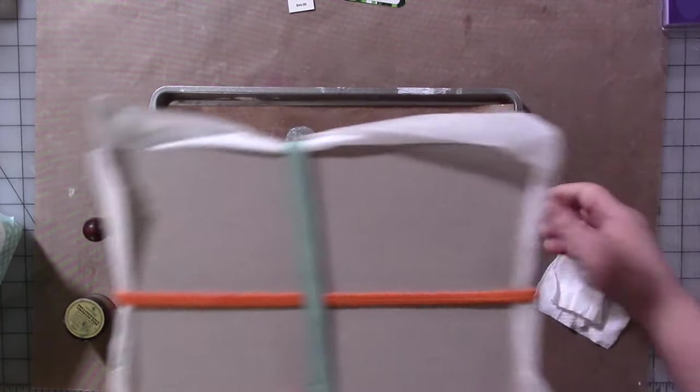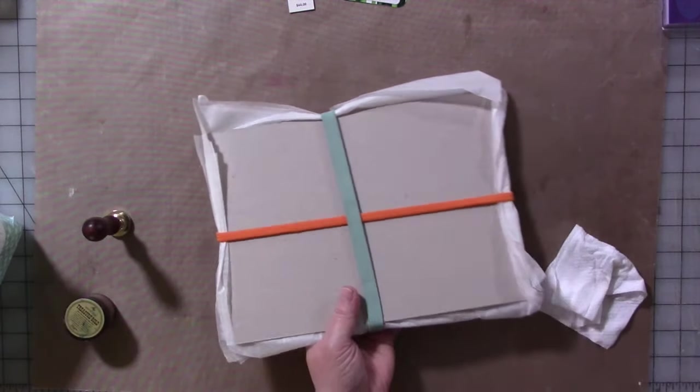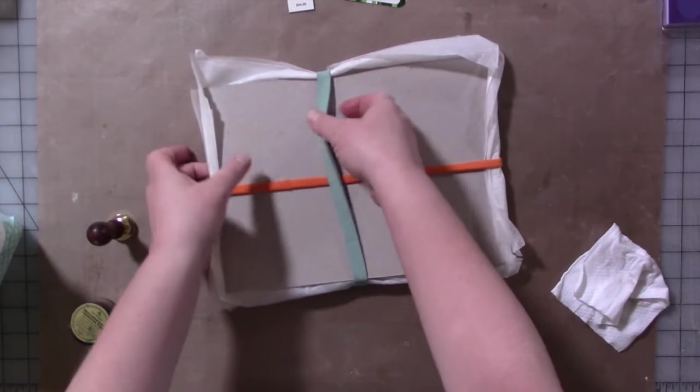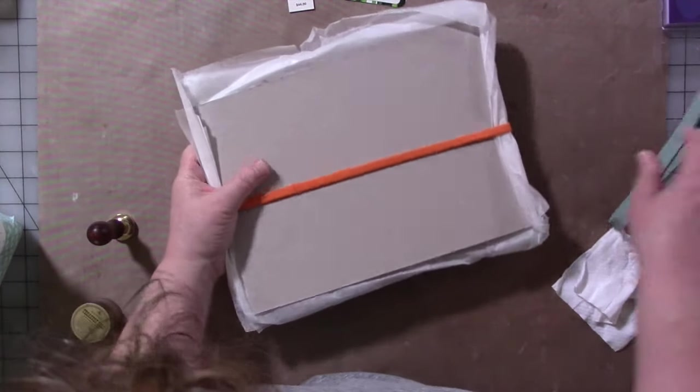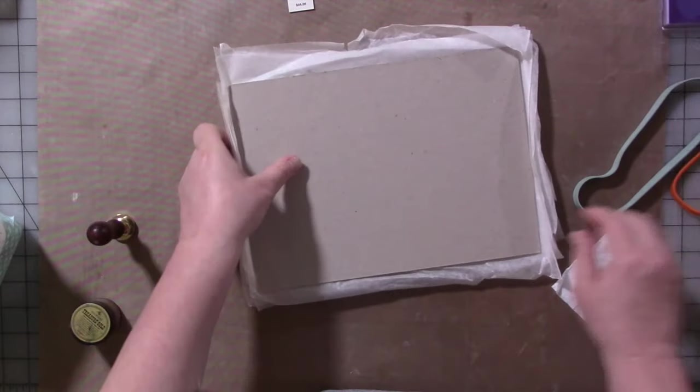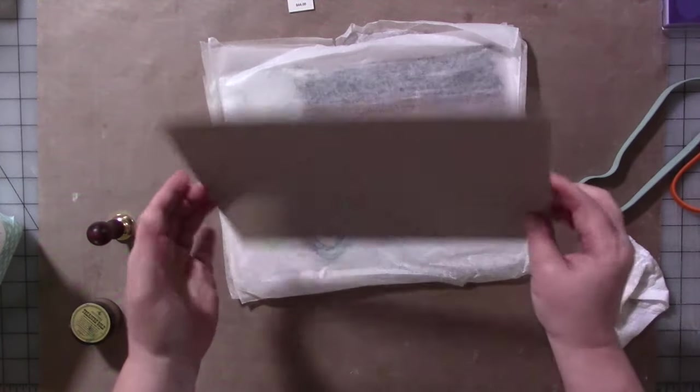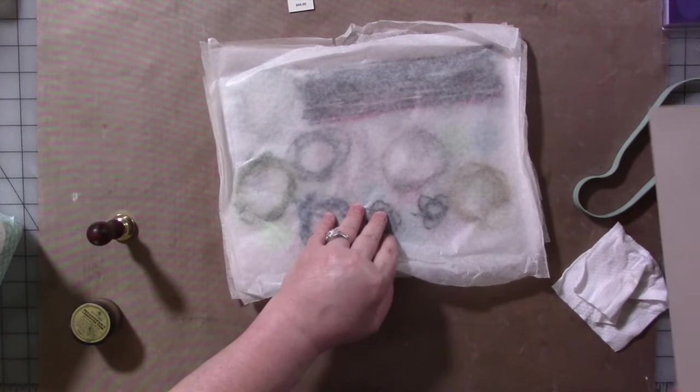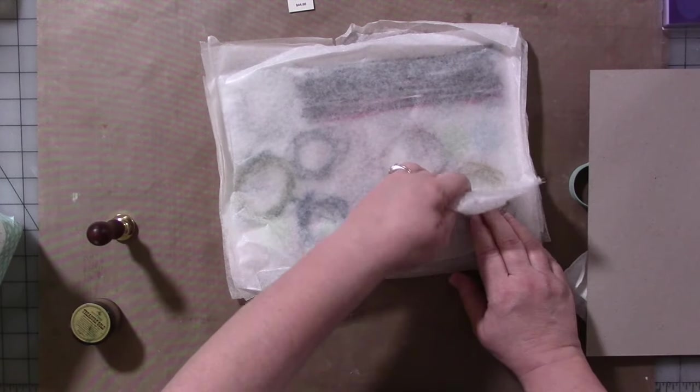And I'll show you. When you're storing them, if you do a lot of them, you do want to store them between wax paper, because they will sort of try to stick to each other. And then put the wax paper sheets between two pieces of chipboard, which is what I have here. And then it's just held together with rubber bands.